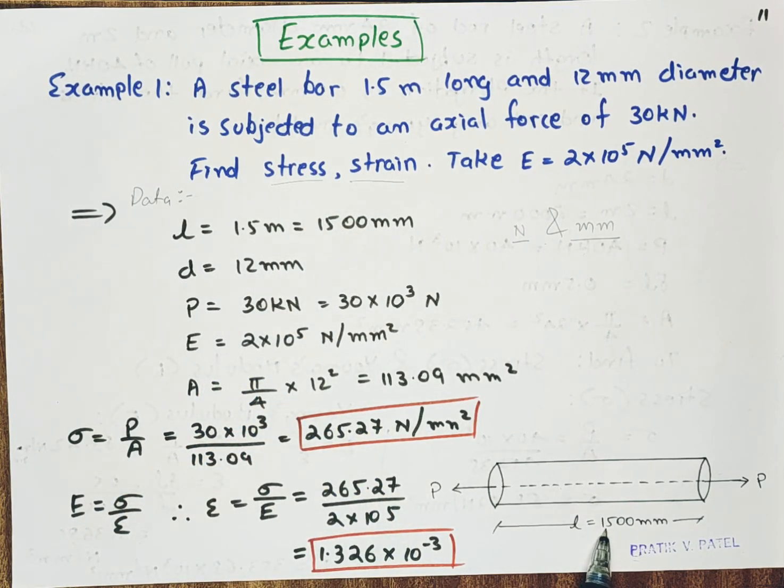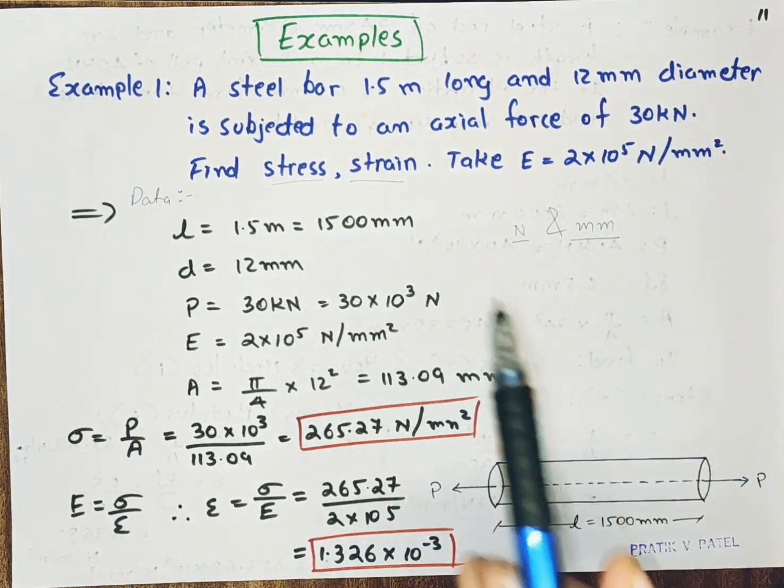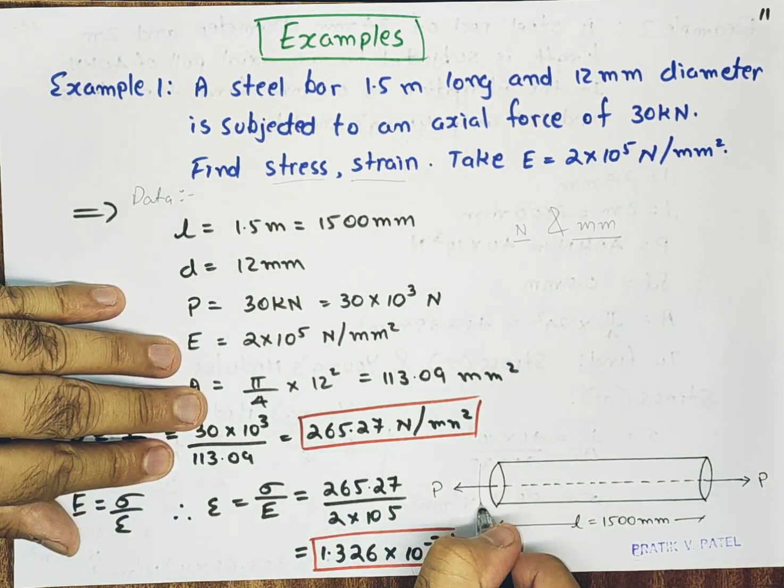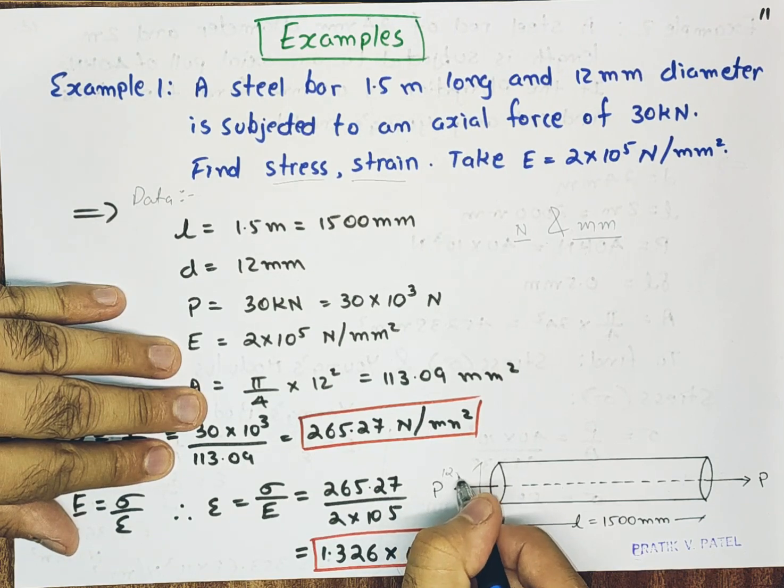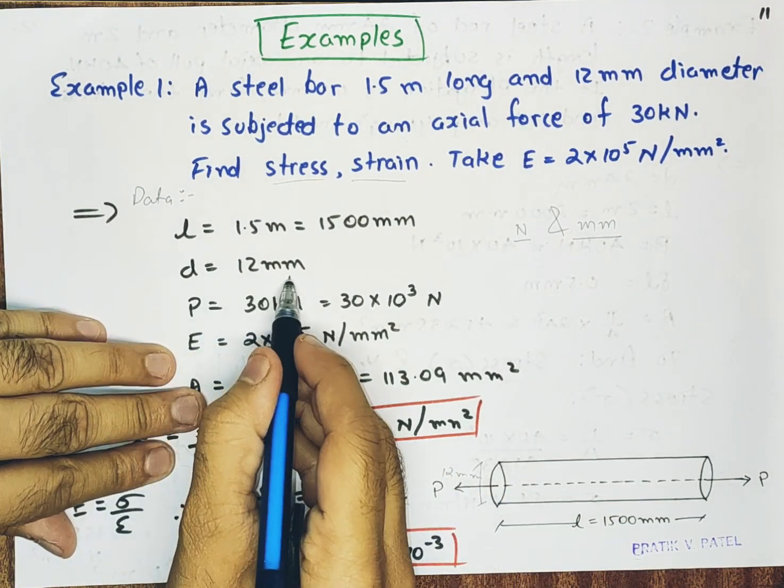12 mm diameter. So diameter here given is 12 mm. D is equal to 12 mm.